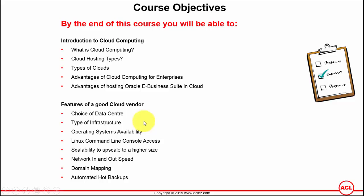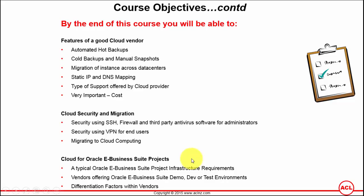Additional vendor features covered include Linux command line console access, the scalability to easily upscale to a higher tier, the network in and out speed, domain mapping, and automated hot backups or cold backups.